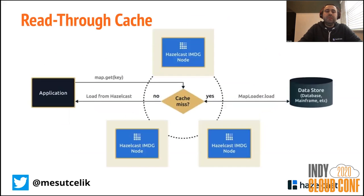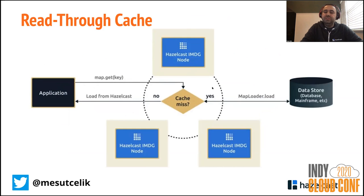A simple read-through cache operation can be seen in this diagram. On the left side you have your application microservice — you do a map.get. If it is a cache miss, Hazelcast as a distributed cache solution goes to the data store, loads the data, puts it inside the cluster, and returns it to your microservice. In your next lookup you will read the data directly from the Hazelcast cluster, gaining performance improvement because memory is faster than disk-based data stores.